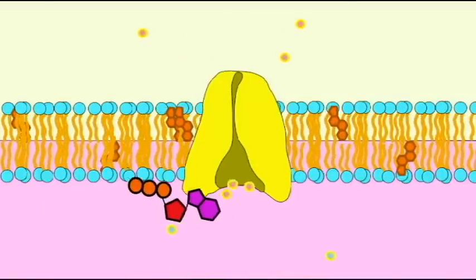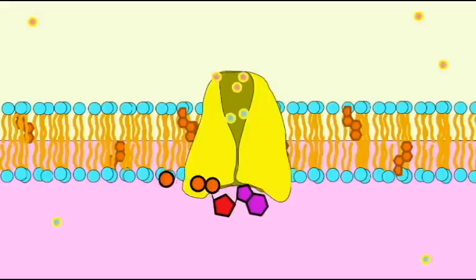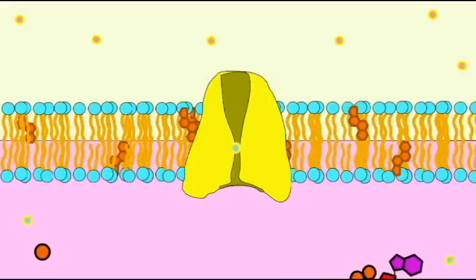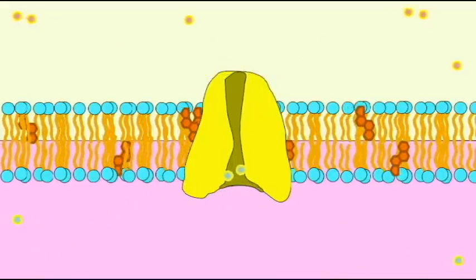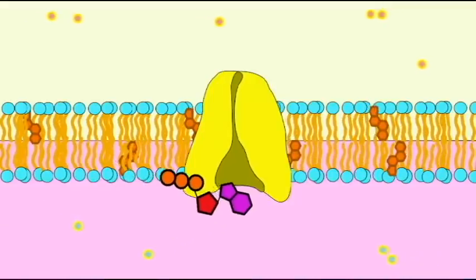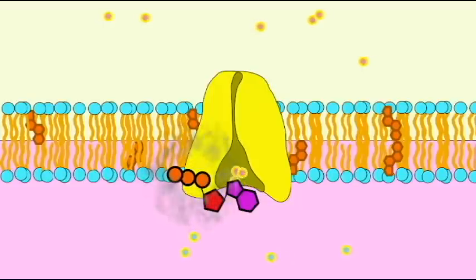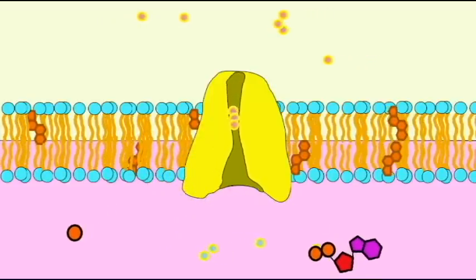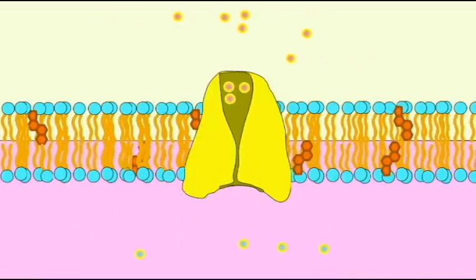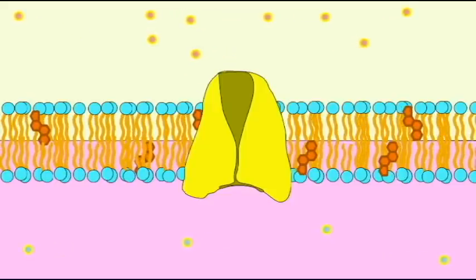This sodium-potassium exchange pump is extremely important. Almost all cells of the body use it, and because three positive sodium ions are pumped out of the cell for each two potassium ions which are pumped into the cell, this establishes an electrical gradient across the cell membrane, where the outside of cells tends to be more positive and the inside of the cells more negative.